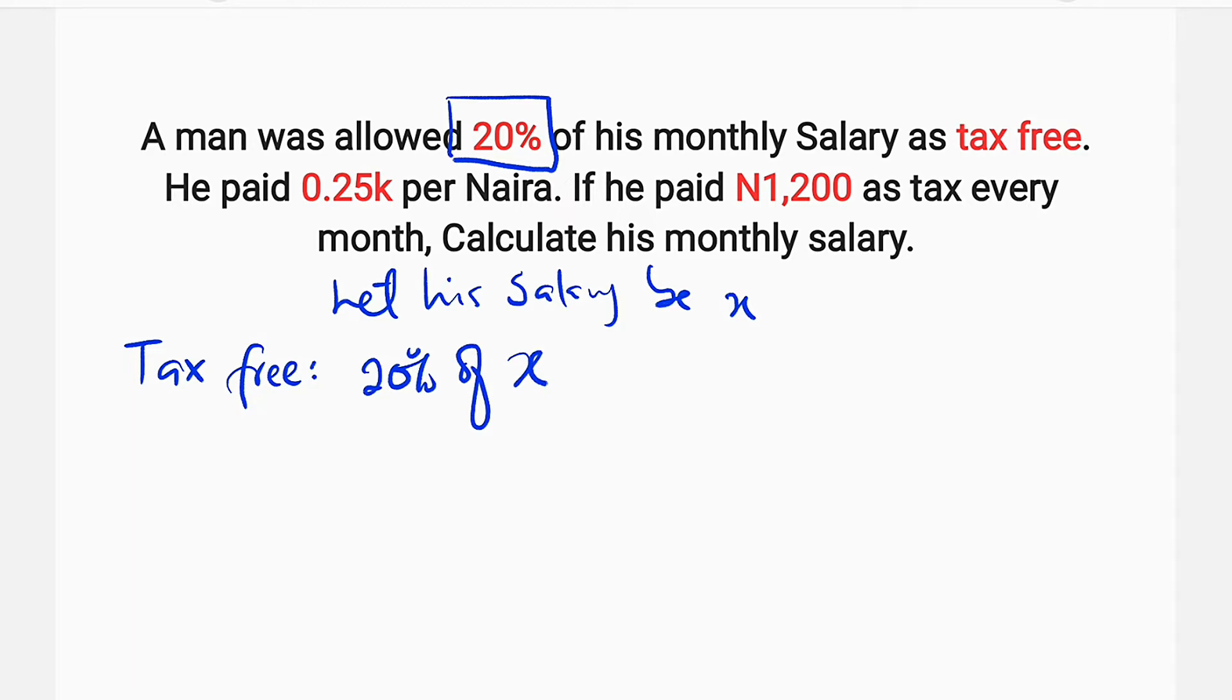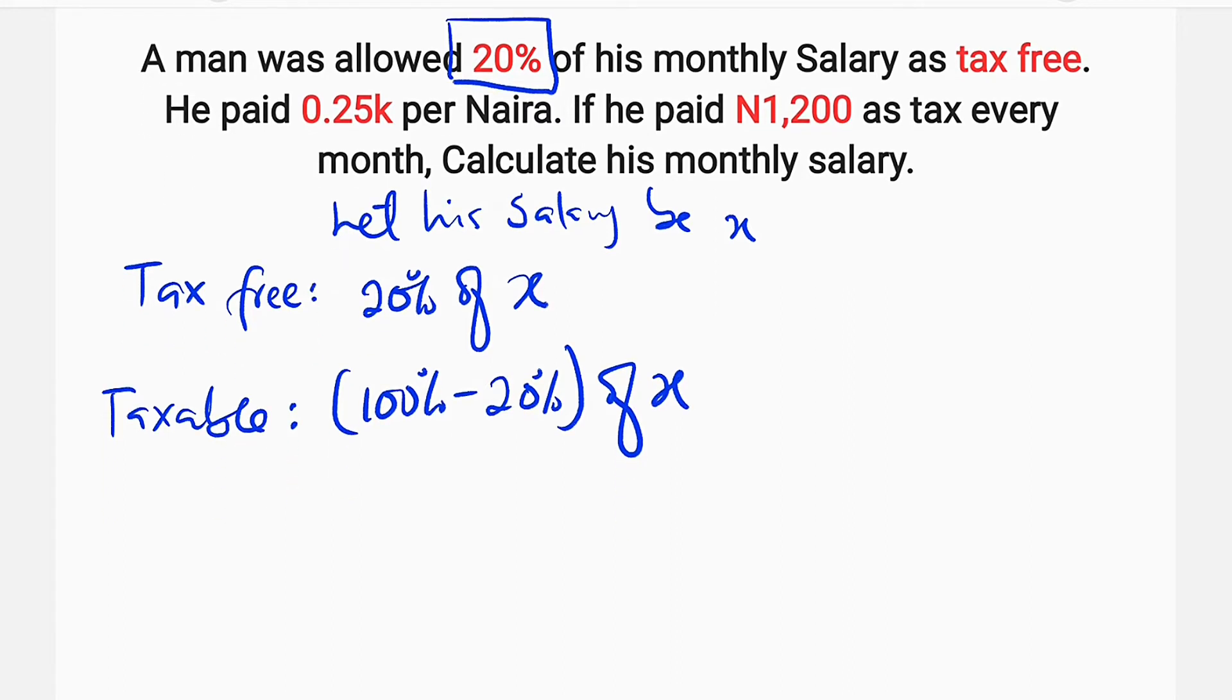So if 20% of X is tax-free, what will be the taxable ones? Taxable will be 80% because if you take away 20% from 100% - because the whole salary is said to be 100% - you're going to obtain 80%. So let me write it as 100% minus 20% of his monthly salary X, and this will be equal to 80% of X.